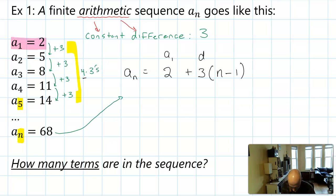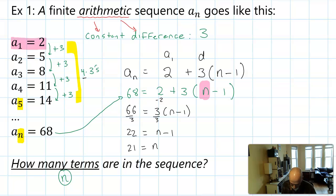a_n is 68, so we could say 68 equals 2 plus 3(n - 1). Notice that we are asked how many terms are in the sequence. That's n that I'm looking for, and what's the only variable left? n. So we should be able to solve for this. We can take away 2, so we get 66 equals 3(n - 1). Instead of multiplying that 3 out, I think it's easier to divide by 3. So 22 equals n minus 1, and 21 equals n. If 21 equals n, then there are 21 terms in this sequence.